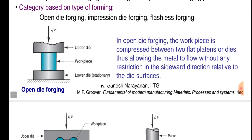In open die forging, the upper die is applied and the work piece is placed between the upper die and the lower die, which is stationary. The work piece is compressed between two flat platens or dies, allowing the metal to flow without any restriction in the sideward direction relative to the die surfaces.